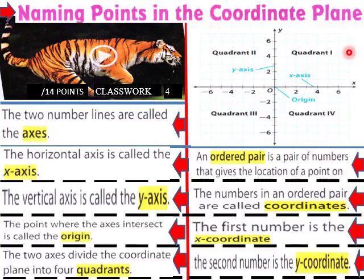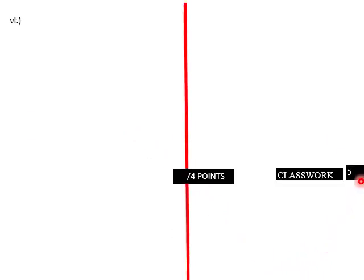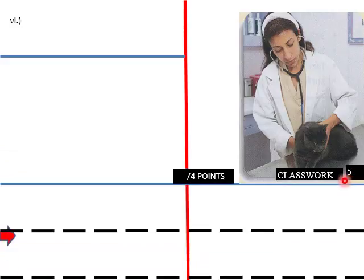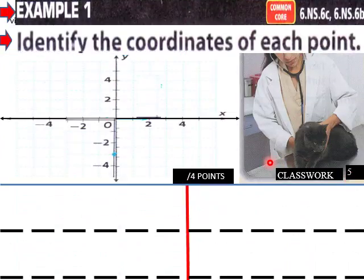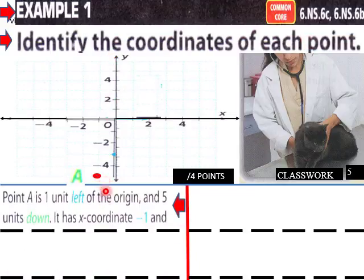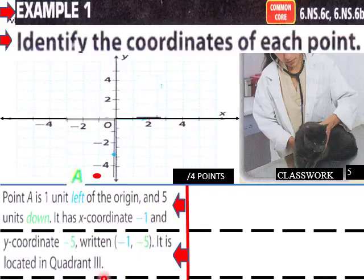Page five in your classwork. Example one: identify the coordinates of each point. We have point A right here. Point A is one unit to the left and five units down. It has an x-coordinate of negative one — your x-coordinate is always first — and the y-coordinate is negative five. Written as an ordered pair: negative one, negative five. It is located in quadrant three.